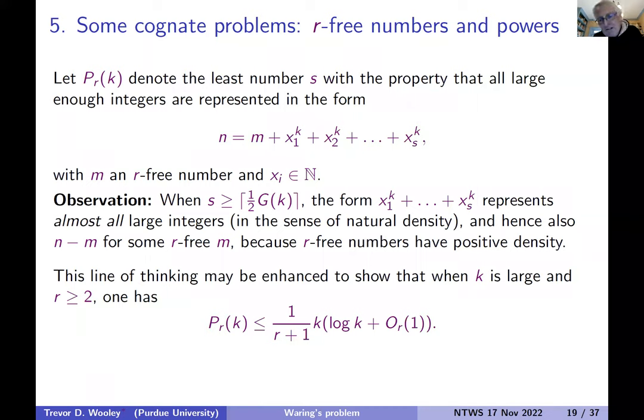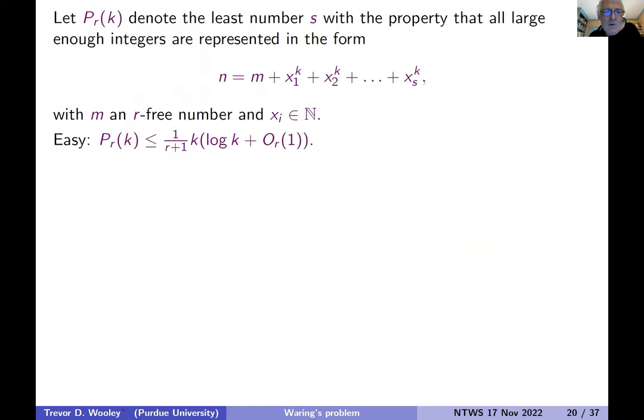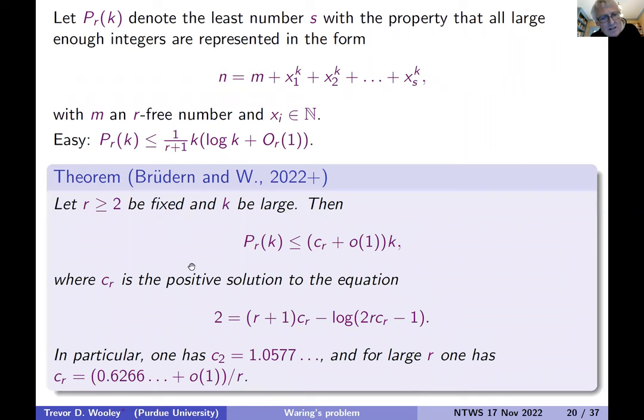And you can jazz this all up a bit and actually do a little better. So for r-free numbers, you could get something quite easy, which would give one over r plus one k log k as your upper bound. Here I'm thinking of r as being fixed, and k as being sufficiently large. The kind of result you can prove using these new ideas would be a constant times k. So the log k again has disappeared.